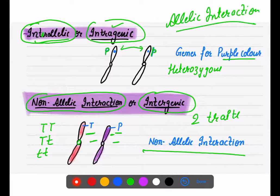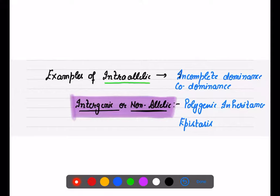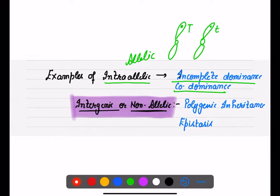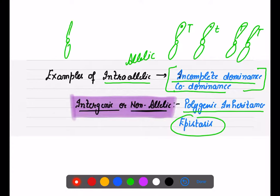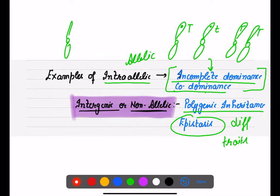Examples of intra-allelic (allelic) interaction include incomplete dominance and co-dominance, where two alleles of a single trait interact. Non-allelic interaction examples are polygenic inheritance and epistasis, where different traits on different loci interact. This distinction will help clarify what we are analyzing in each topic.